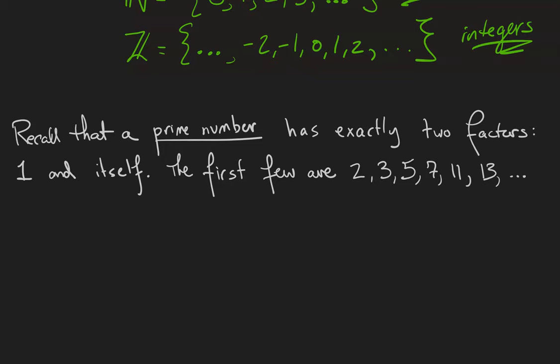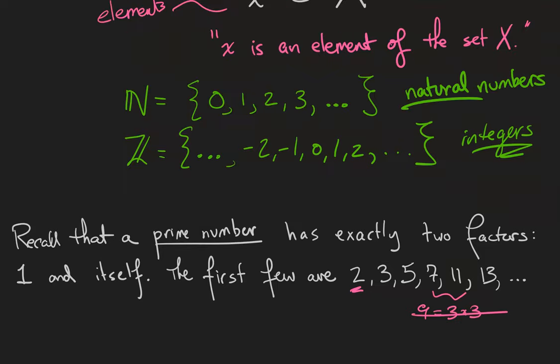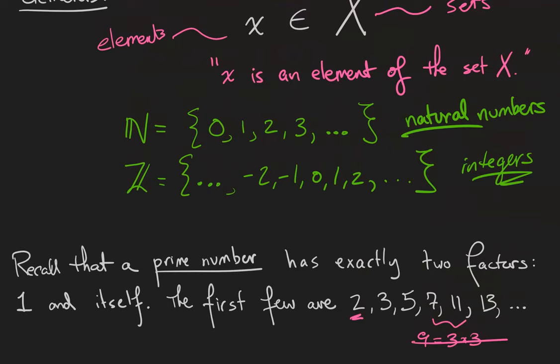This doesn't exhibit quite a nice pattern. They're not all odd. For example, 2 is in here and it's even. They're not all just two apart. For example, we go from 7 to 11, skipping 9 because 9 is equal to 3 times 3.